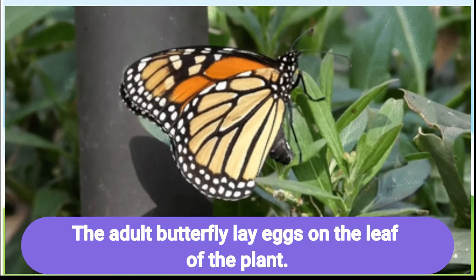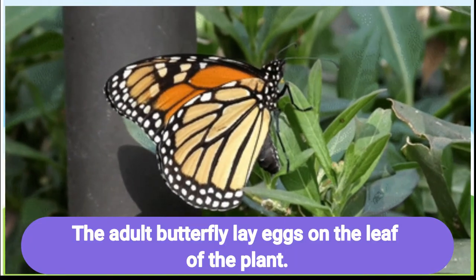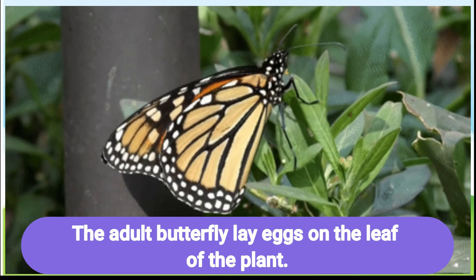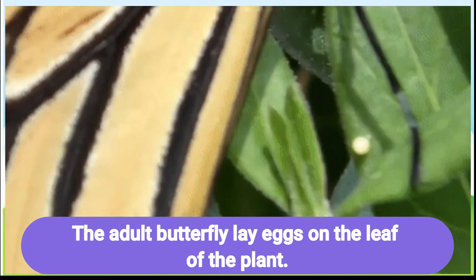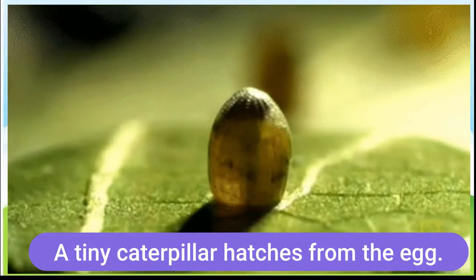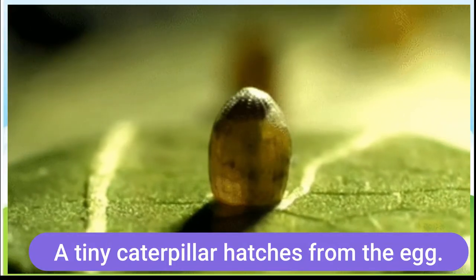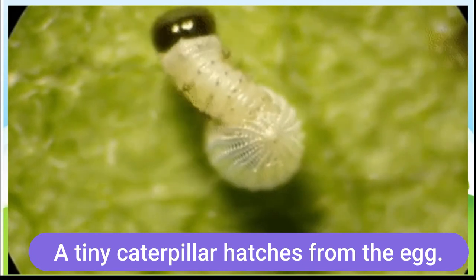The first stage is the egg. The adult butterfly lays eggs on the leaf of a plant. The egg stage usually lasts for three to seven days, and it varies among different species of butterfly. A tiny caterpillar hatches from the egg.